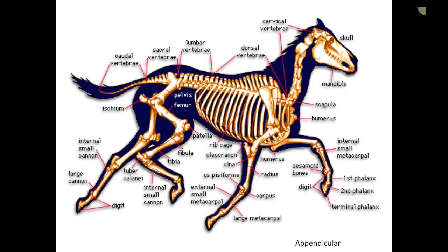How it varies in horses and cows: at the distal aspect, horses have one toe and cows have two. In these large animals, the metacarpal bones are fused, the metatarsal bones are fused, the tibia and fibula are fused, and the radius and ulna are fused. Going back to the ribs, the sternum is also fused in large animals.